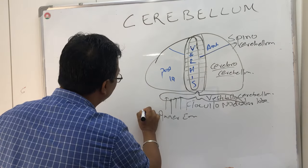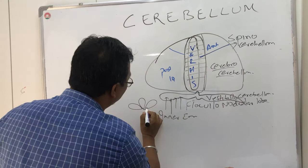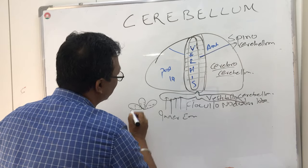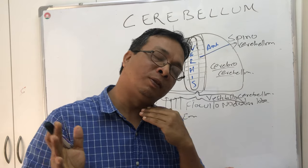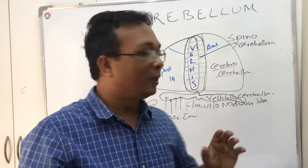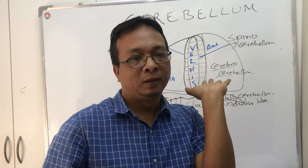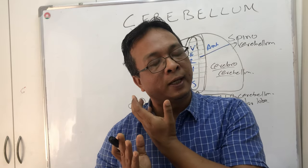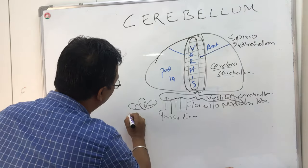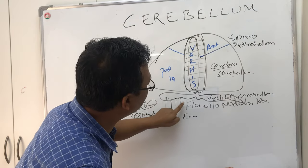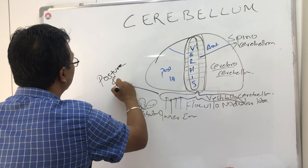The fluid in the semi-circular canals tells us about the position of the head in relation to space. If you move your head left, the fluid also moves left and signals your brain that your head is on the left side. If you move right, the fluid moves right. So this inner ear vestibular part constantly communicates with the vestibulocerebellum or flocculonodular lobe, and it is concerned with posture and balance.